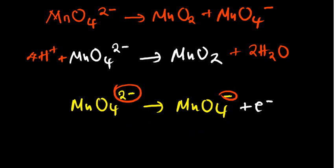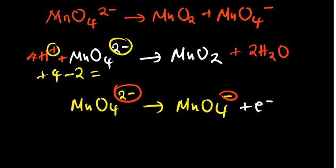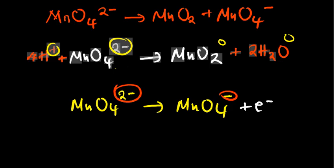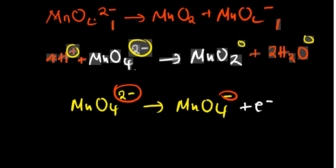Going to the first half-reaction: we have a positive 4 from the 4 hydrogen ions, and a -2 (coefficient 1, remains -2), giving a charge of positive 2 on the left. On the right there are zeros, so the charge is 0. From 2 to 0 is a reduction. We subtract from the positive side to reduce it, so we need to add 2 electrons on the left-hand side to balance the charges.